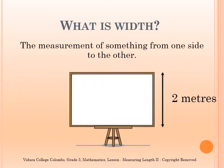What is width? Width is the measurement of something from one side to the other. When you look at the picture of this whiteboard, you can see its width is shown using an arrow. The width of the whiteboard is 2 metres.